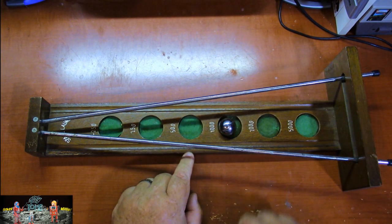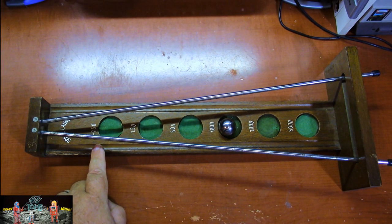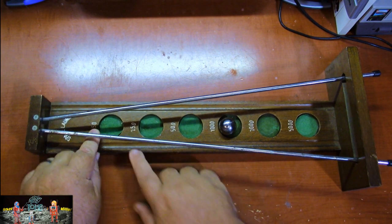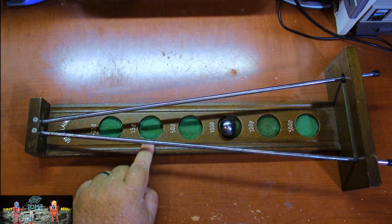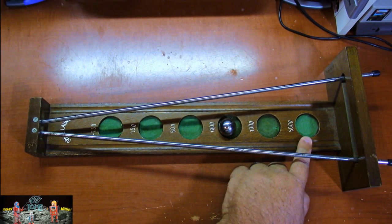And you can see there are point values assigned to the holes. 250, no, yeah 250, that's minus 250. Is that a minus? Yeah, that's a minus 250. Ooh, don't land there. 250, 500, 1,000, 2,000, and 5,000 points.